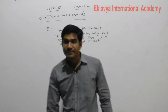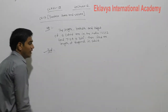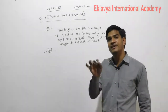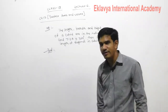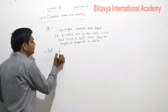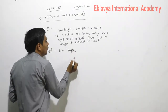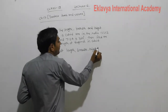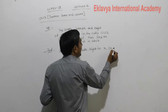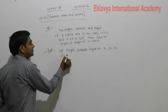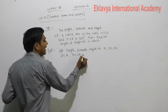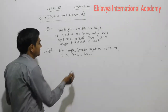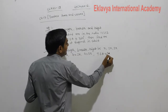For calculating the length of the diagonal in a cuboid, we require length, breadth, and height. But here length, breadth, and height are not given directly — their ratio is given. So let: length = X, breadth = 2X, and height = 3X. And what is given is TSA = 36 meter square.